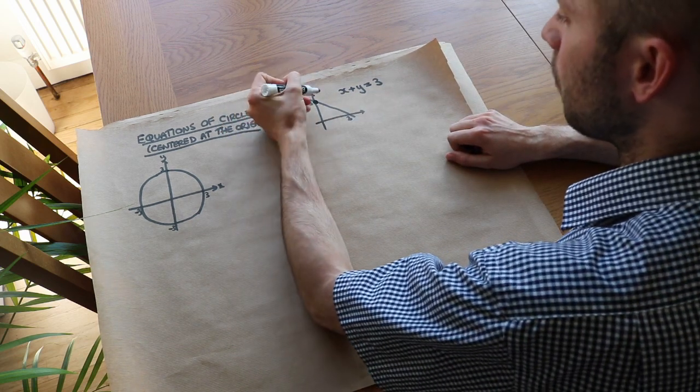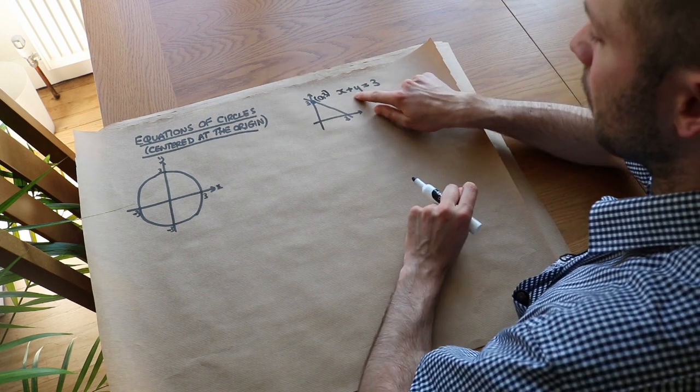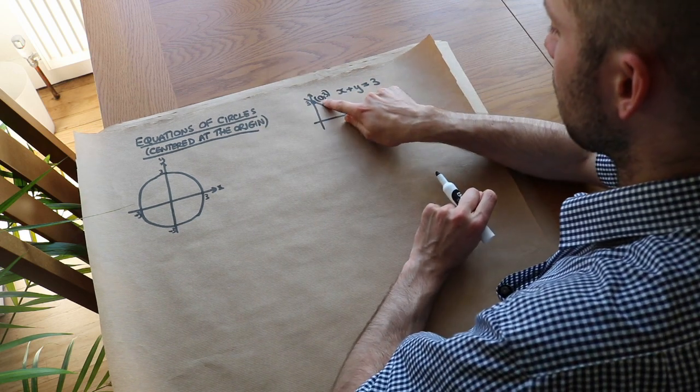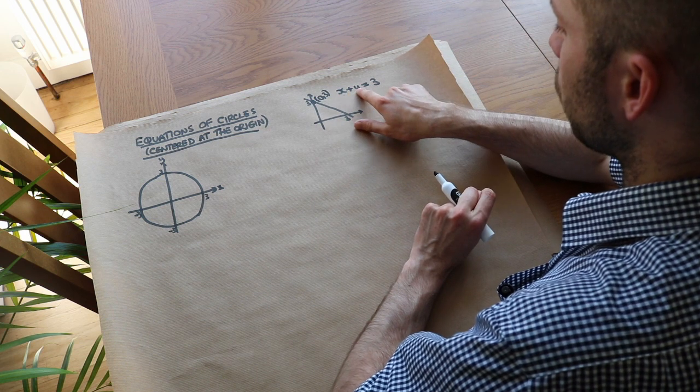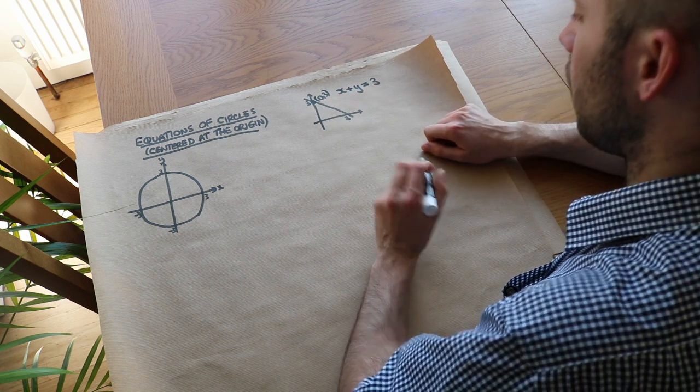So if I pick this point here for example, that's the point (0, 3). It has to obey this membership rule here. So we can see the x value is 0 plus the y value, which is 3 in this case, does equal 3. So it obeys that rule so that point is allowed to belong on the line.